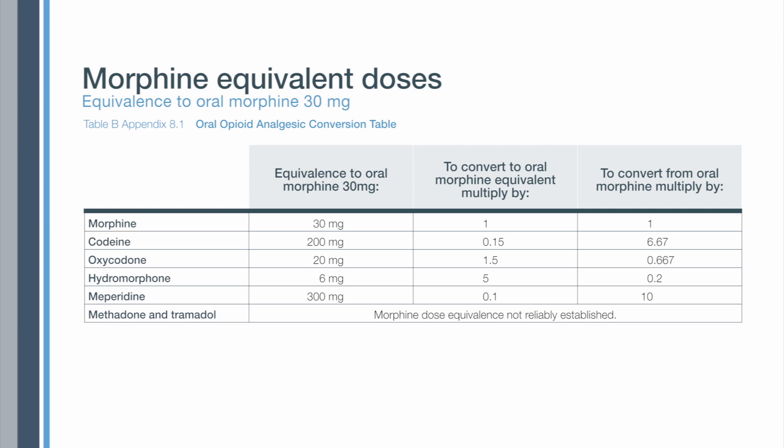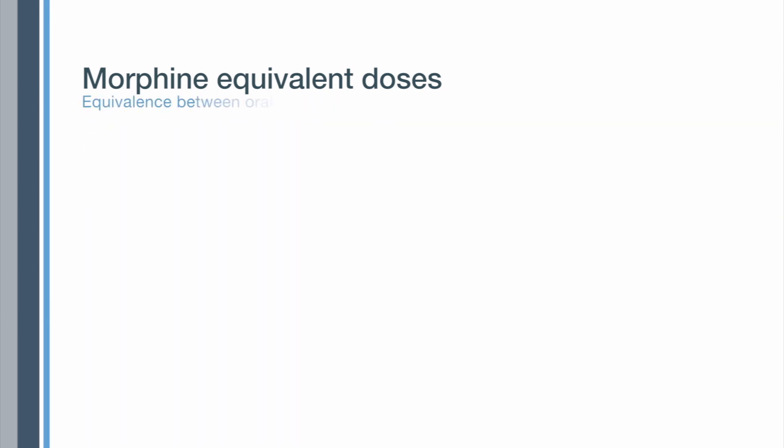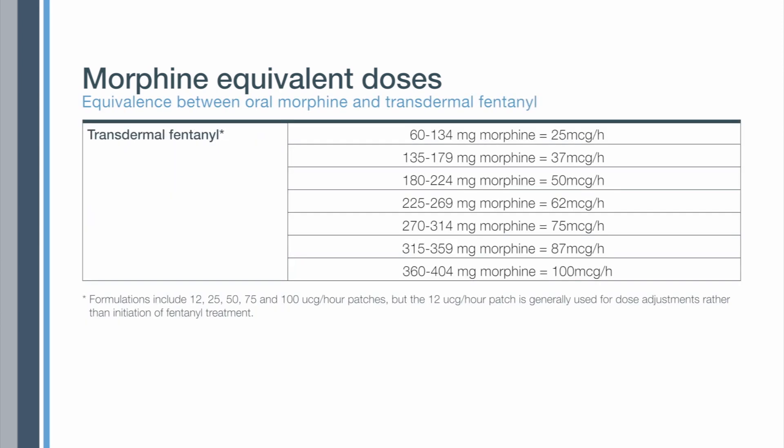When you are doing a conversion between fentanyl and morphine, it is a little bit more tricky because fentanyl is prescribed as a patch used every three days. Therefore, the conversion to daily dosing of morphine is more complicated, and the conversion table helps you make that calculation safely when transferring somebody from fentanyl to morphine.